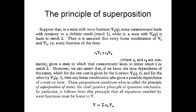To generalize the superposition principle, if you have a general number of states c1, c2, and so on up to cN, their linear combination is still a valid representation of a state of the physical system. The formula shown for two states is just a special case of this more general expression, limited to the linear combination of only two states.